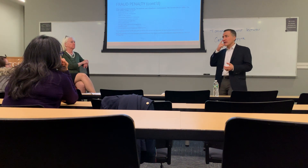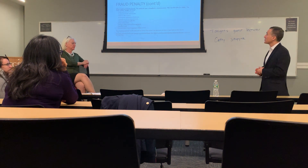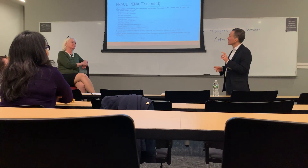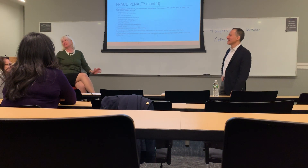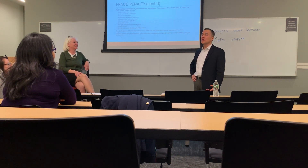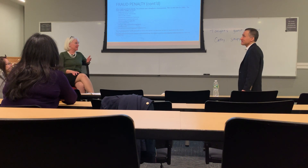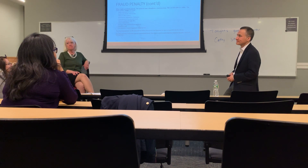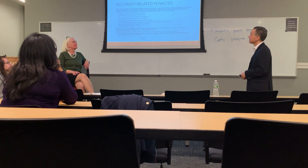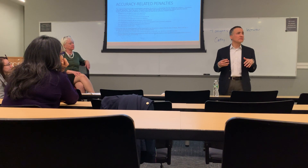The underpayment is what the 75% applies to — the difference between what you report as tax and what you ought to have reported. For joint returns, if one spouse committed fraud, the other is an innocent spouse. They're both jointly and severally liable for the tax, but only the bad actor spouse is liable for the fraud penalty. If innocent spouse relief is granted to the party who did not commit fraud, that person will not be liable for the penalty.